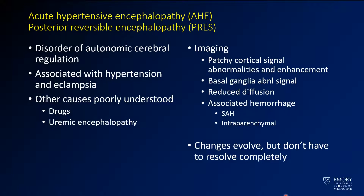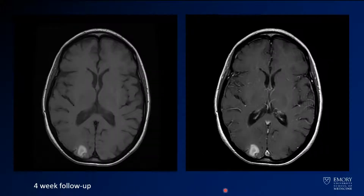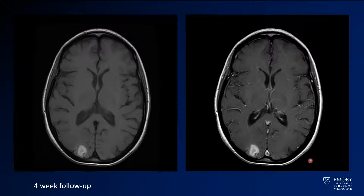Although it's called a reversible encephalopathy, these changes don't necessarily resolve completely. At the four-week follow-up, all of the hemorrhage centrally is now T2 hyperintense — very bright — but a lot of the surrounding edema has gone down, and many of those edema areas have resolved. On the four-week follow-up pre- and post-contrast, there's a lot of intrinsic T1 hyperintensity but not much enhancement, and again no other enhancing lesions to suggest metastatic disease.